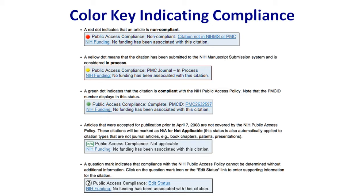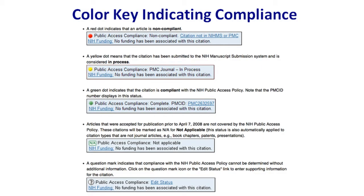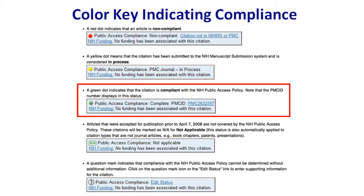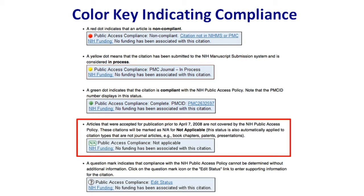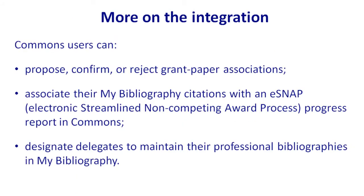There are little buttons indicating what's in compliance and what isn't. The first indicator means it's not in compliance — you can deposit right from there by clicking on NIMS if it's NIH funded. The second one shows it's in compliance and happens to be a PMC journal in process. The green one shows everything's done and there's a PMC ID. There's also one that means it doesn't need to be in compliance. And then there's one with a question mark — if you click on that, it'll tell you what the problem is for that publication in relation to the public access policy.